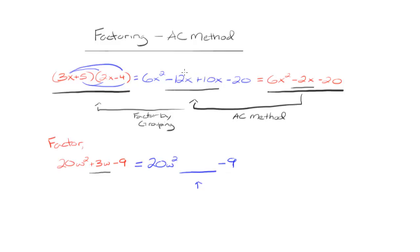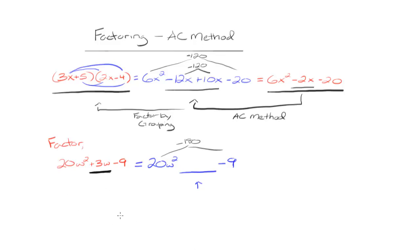We use a special property: every time this multiplication happened, before simplifying, the middle numbers — 12 and 10 — multiply to be 120, and the end coefficients, 6 and negative 20, also multiply to be negative 120. So we need to split 3w into two w-terms whose coefficients multiply to the same number as 20 times negative 9, which is negative 180.